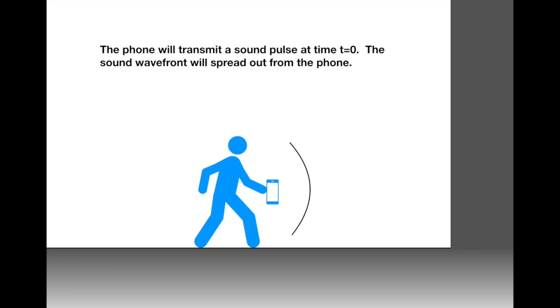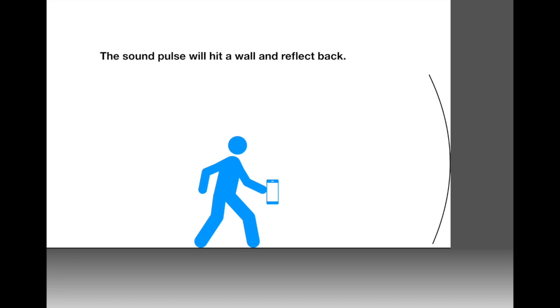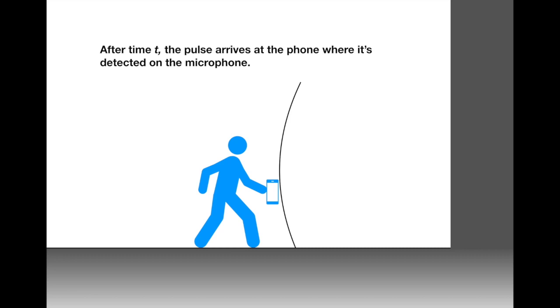The sound wavefront will then spread out from the phone. Here the sound wavefront is shown as the black line moving away from the phone and it's curved because the sound spreads out in all directions. The wave will move across the room and eventually collide with a wall. It will hit that wall and then reflect back. This is basically an echo. The sound wave will come back to the phone and then the phone is going to use the microphone to detect the signal from the reflected pulse.